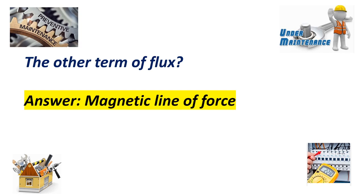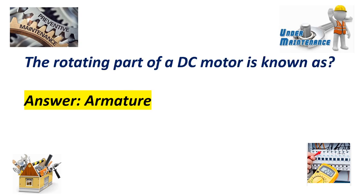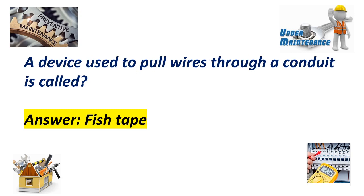The other term of flux? Answer: Magnetic line of force. The rotating part of a DC motor is known as armature. A device used to pull wires through a conduit is called Fishtape.